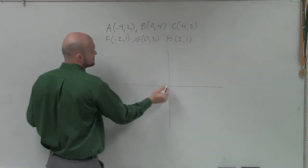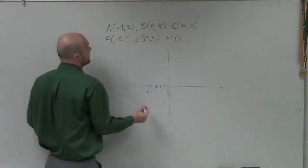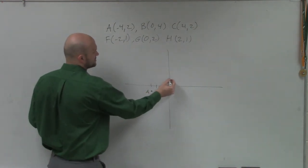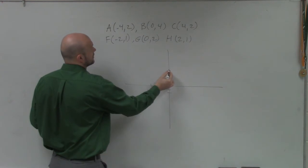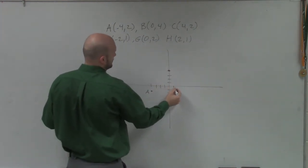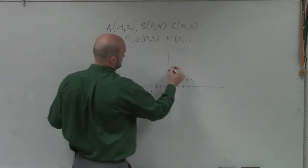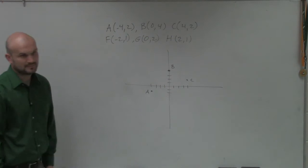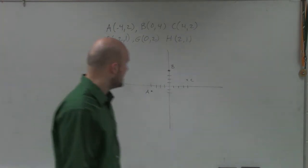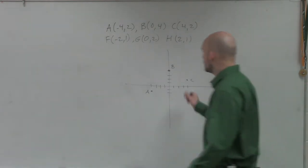So I go to A, which is negative 4, 2. 1, 2, 3, 4, negative 2. I go to B, which is 0, 4. 1, 2, 3, 4. And I go to C, which is 4, 2. 1, 2, 3, 4, up to. OK. Would everybody agree with that rough assessment? So that's going to be one of our original image.